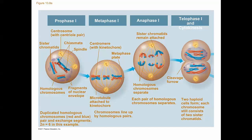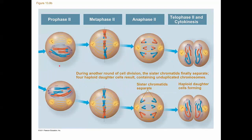Moving into meiosis II, each one of these cells is going to divide again. These two cells being formed are haploid now, because each one has three chromosomes in it, whereas the original cell we started with had six. Each of these cells begins to divide again - we line up the chromosomes in a single file line at the metaphase plate, and sister chromatids pull apart into daughter chromosomes, just like we saw in mitosis. At the end we form four new haploid cells, and each one is genetically different than the rest.